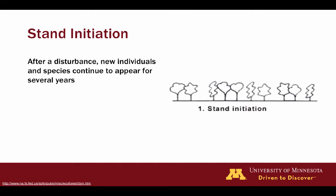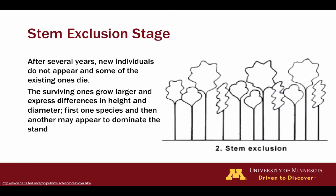Stand initiation occurs after a disturbance — a relatively discrete event — where new individuals and species continue to appear for several years. In this example, we look at a stand-replacing disturbance, which can be a natural disturbance such as fire or a silvicultural treatment like a clearcut. An important part of stand initiation is that these individuals are free to grow — they are not limited by growing space, as there is excess growing space available.